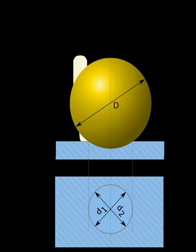The indentation is measured and hardness calculated as P divided by the surface area of the indentation, where D equals diameter of indenter.